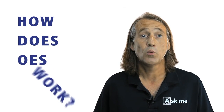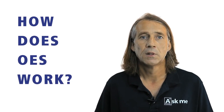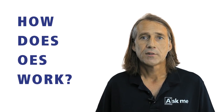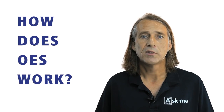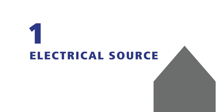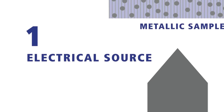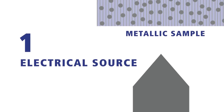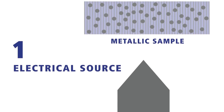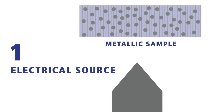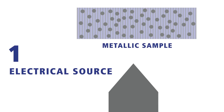So how does optical emission spectroscopy work? All OES analyzers contain three major components. The first is an electrical source. To excite atoms within a metallic sample so that they emit characteristic light or optical emission lines requires a small part of the sample to be heated to thousands of degrees Celsius.